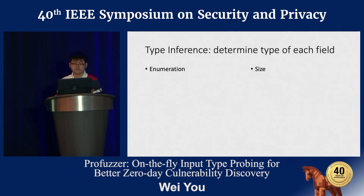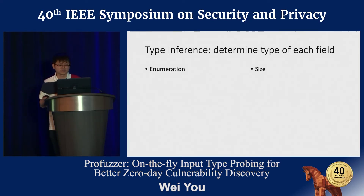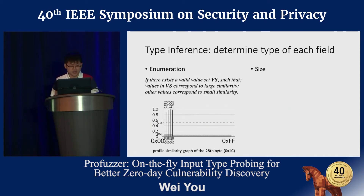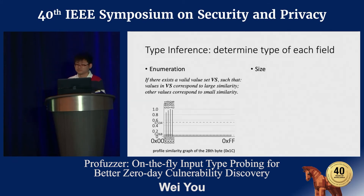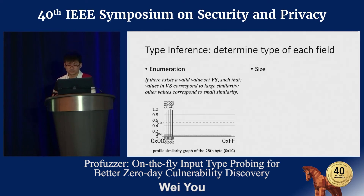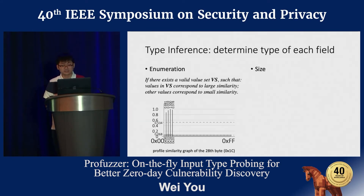Given a group of consecutive bytes as an input field, the next step is to determine the field's type, using enumeration and size as examples. For an enumeration field, there is a proper subset of all possible values such that values in the subset have a similarity score larger than the mid-range, while others have a score smaller than the mid-range. As shown in the profile similarity graph of byte 28, an enumeration field has four valid values that allow the program to move forward with high similarity scores, while invalid values cause early termination.